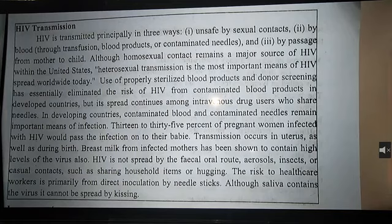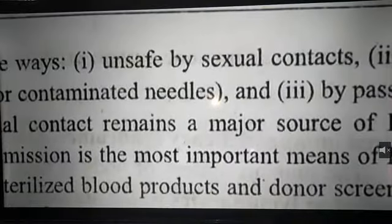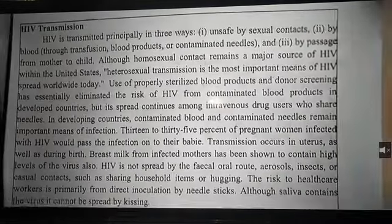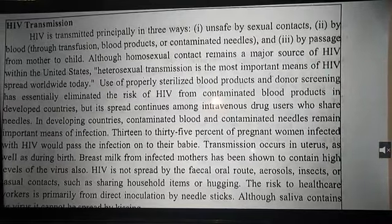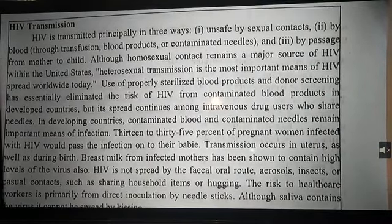HIV is transmitted from one person to another human being in three ways. First way is unsafe sexual contact. Second way is by blood transmission through needles or blood products. Third way is by passage from mother to child.